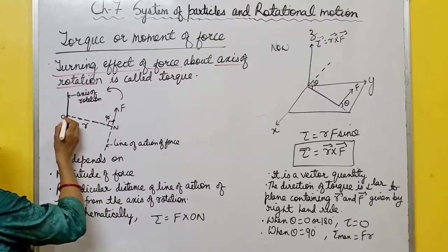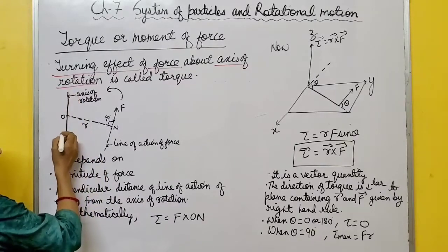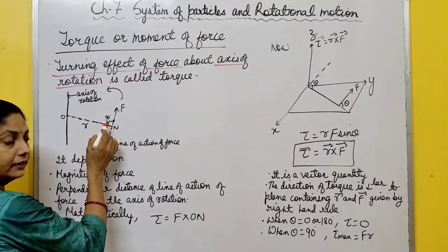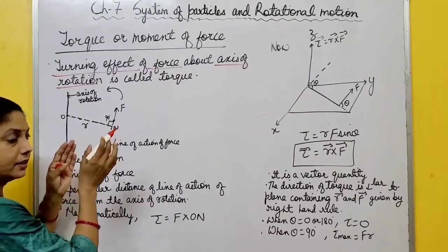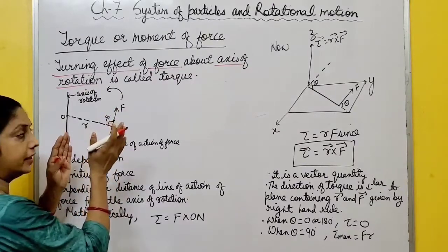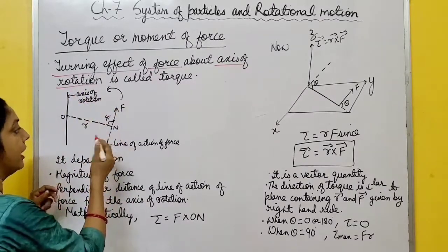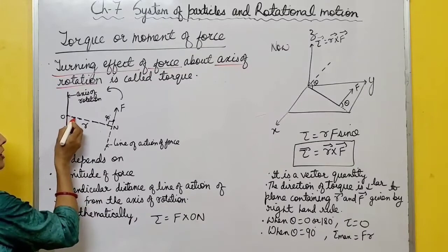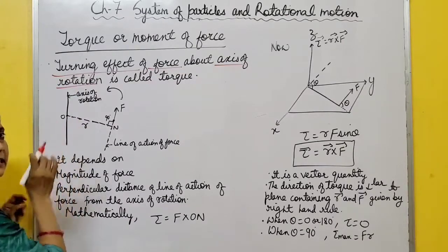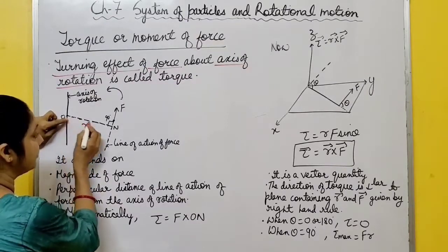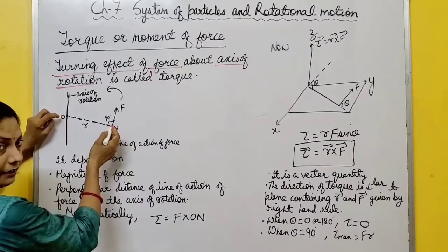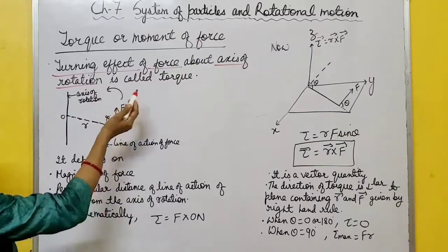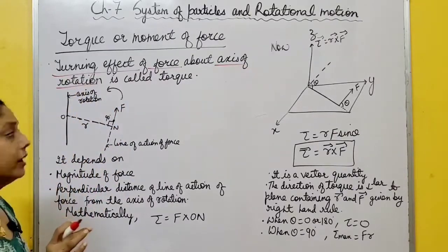The best example is a door. The fixed point is the axis of rotation about which the door rotates. You apply force near the handle. Greater the magnitude of force, greater the turning effect. Also, you always apply force near the far end rather than near the fixed point. If you apply force near the fixed point, less turning effect is produced. Greater the distance from the axis of rotation at which force is applied, greater is the turning effect.